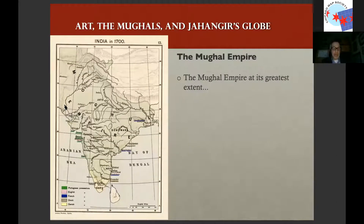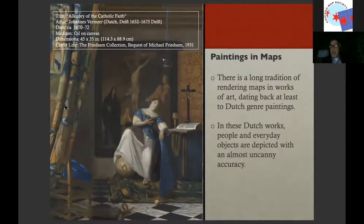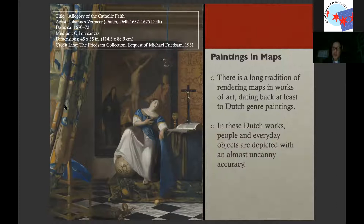At its greatest extent, you can see it covered all of what is today modern India, as well as some regions beyond. Now let's set that aside and look at this parallel topic of paintings and maps, which the two will converge on soon. This is something that's been written about in the Western tradition, because in Western art history there is a long history of maps being included in artwork. In particular, it's interesting to see the Dutch genre paintings, because those have the same level of detail we're going to see in these Mughal artworks.